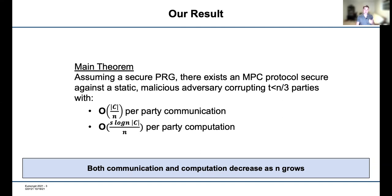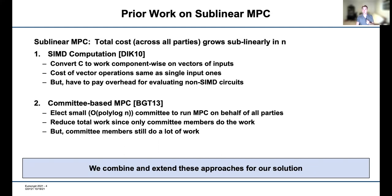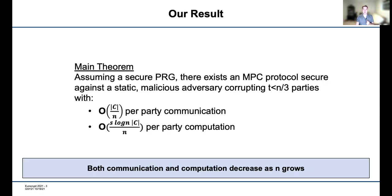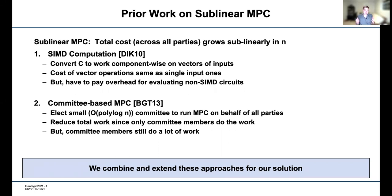Today I'm going to present how this construction works. But before that, I want to note that we are not the first to achieve MPC whose costs decrease as the number of parties increases. Traditionally, such protocols fall under the title of sublinear MPC. The reason is that when the total cost of the protocol grows sublinearly as the number of parties increases, then the average per-party cost is decreasing. There are two general approaches for achieving sublinear MPC.